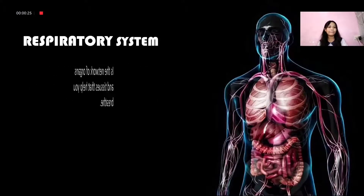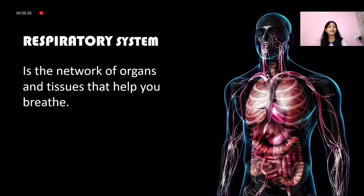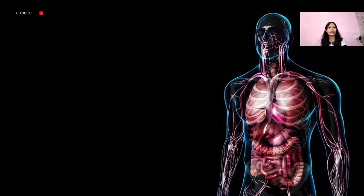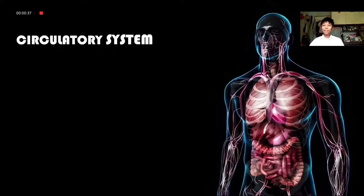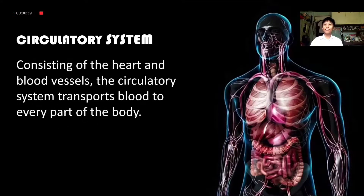The respiratory system is the network of organs and tissues that helps you breathe. The respiratory system brings oxygen into our bodies. The circulatory system, consisting of the heart and blood vessels, transports blood to every part of the body.